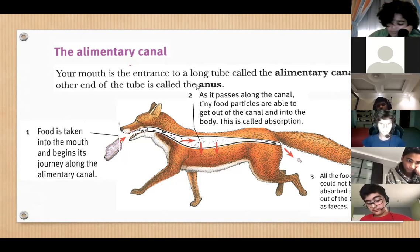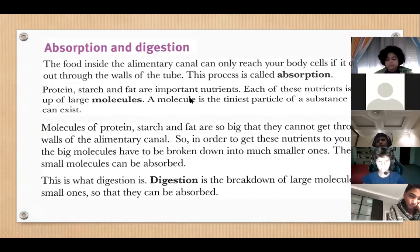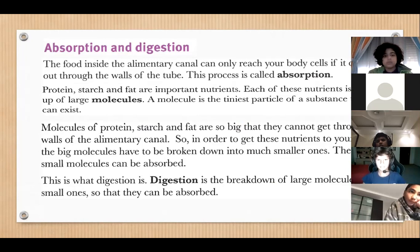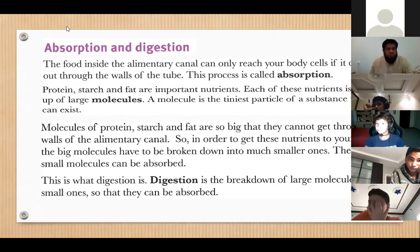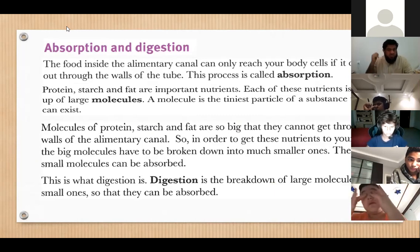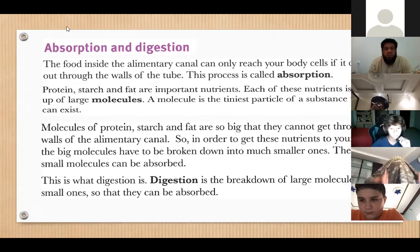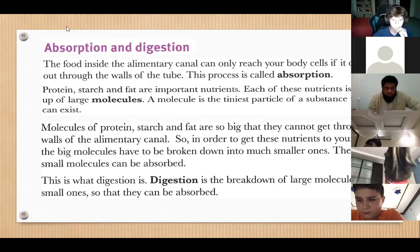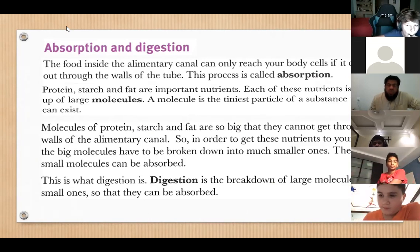Let's go to the next slide. Here's a difficult task — you will read and tell me what you think about it. The food inside the alimentary canal can only reach your body cells if it can get out through the walls of the tube. This process is called absorption. Protein, starch, and fat are important nutrients. Each of these nutrients is made up of large molecules. A molecule is the tiniest particle of a substance that can exist.